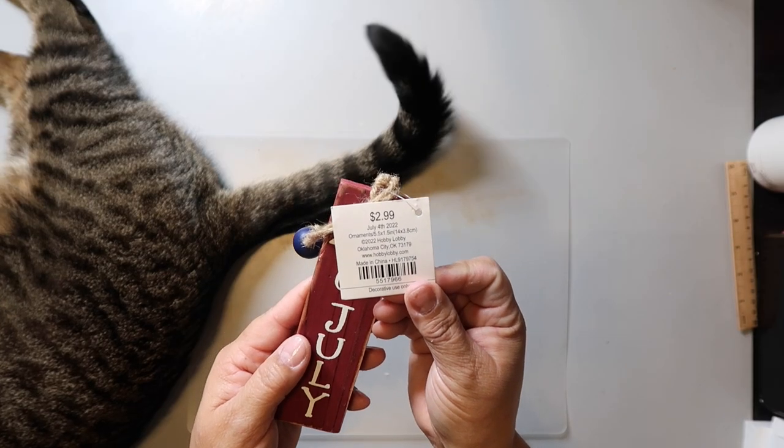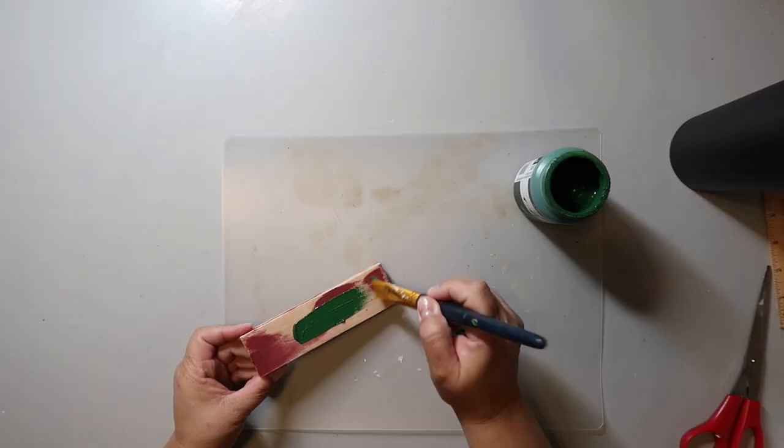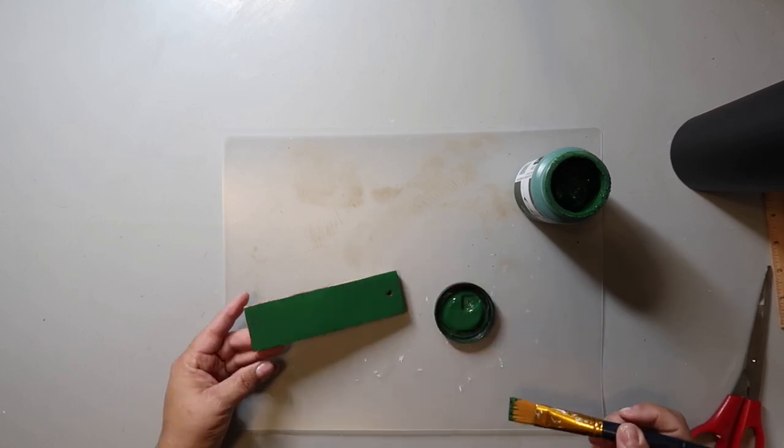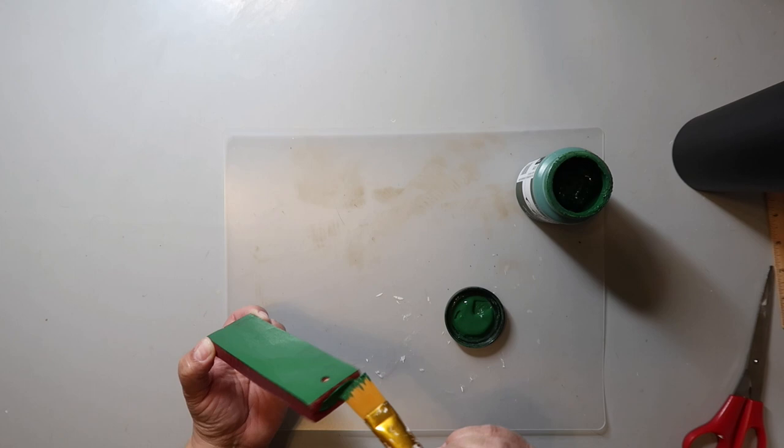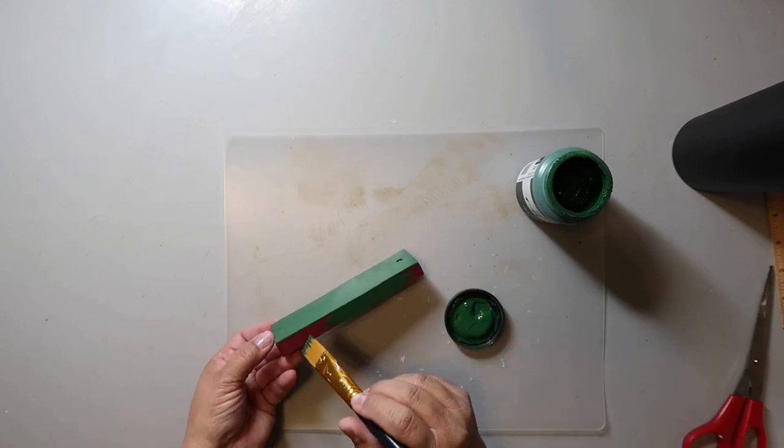This was a 90% off clearance find from Hobby Lobby, so I only spent 30 cents. I removed the jute twine and the bead, and then I decided to sand it down before I painted it. I'm using Waverly chalk paint in the color antique green. I just love this color green for Christmas crafts.